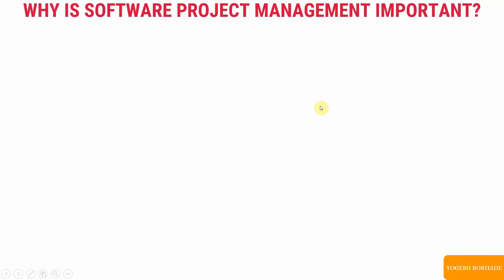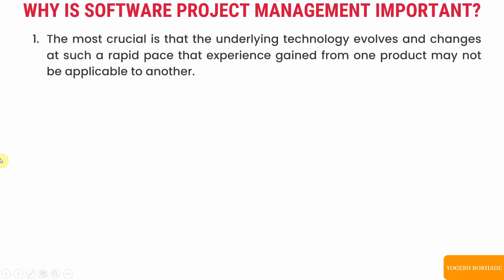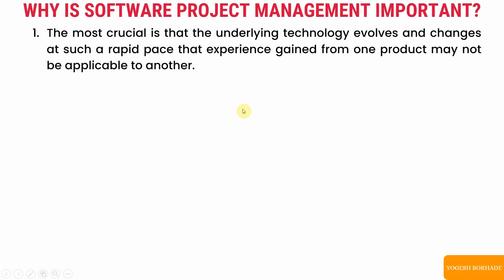Let's start with the first topic: why is software project management important. Whenever we start a project, we want it to achieve its goal, and to do that it is necessary to manage it properly. Different projects may use different technologies, so experience or solutions from one project may not apply to another. The underlying technology evolves and changes at such a rapid pace that experience gained from one product may not be applicable to another.